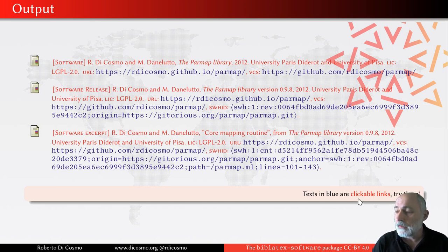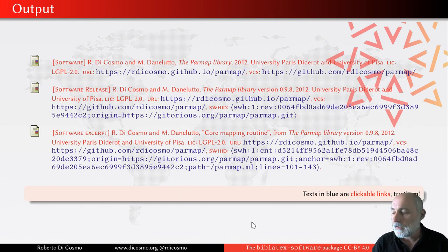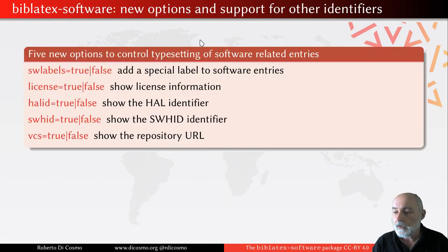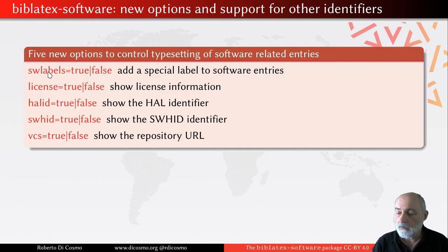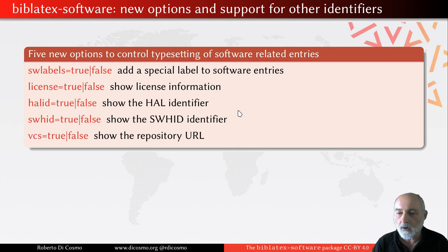Some may think there is too much information in these entries — a URL, a version control system URL, a SWHID — perhaps too many. In general, it is better to have everything at hand because once printed it does not get lost. But if you do not want all these elements, the package has quite a number of options to control what is typeset and what is not. In particular, the software, software release, software excerpt, and software module labels are shown by default, but you can add 'softwarelabels=false' to the package options and they will disappear. The same applies to the license, HAL identifier, SWHID, and version control identifier — you can control whether each appears or not.